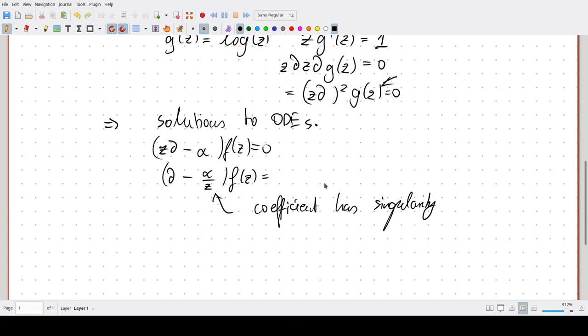And if we now look at our other differential equation, well z d z d g of z, what is that? That's z squared d squared g of z plus z d g of z. And if we divide through by the leading coefficient, so this is zero and zero is the same as the second derivative.